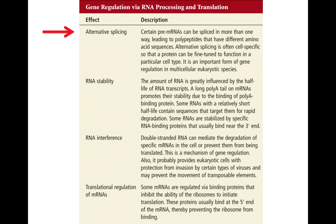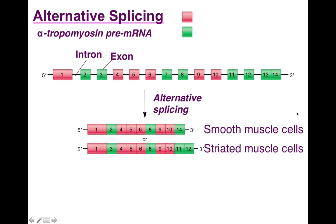Many different mechanisms for controlling expression of genes occur post-transcription, including alternative splicing, RNA stability, RNA interference, and translational regulation of messenger RNAs. We're going to discuss alternative splicing in this lecture.